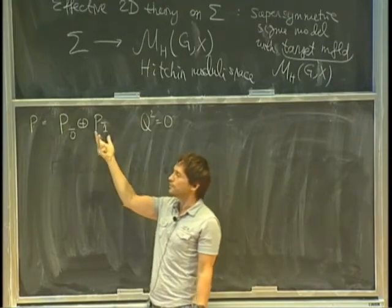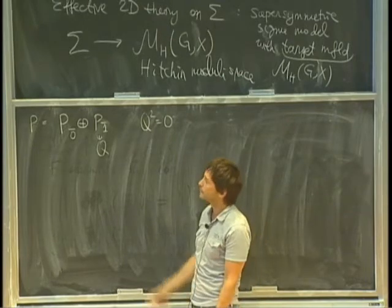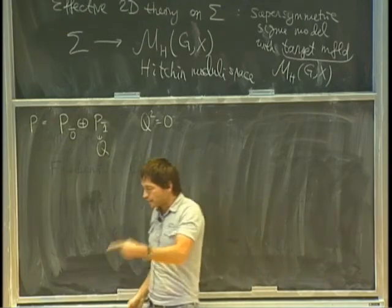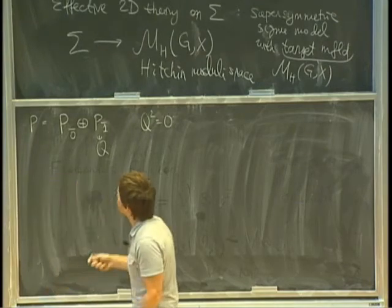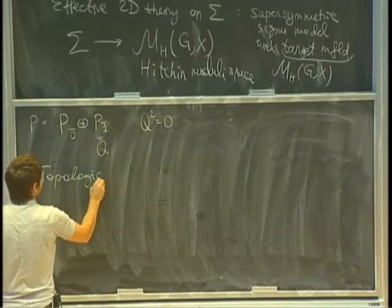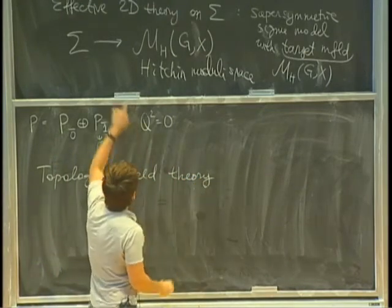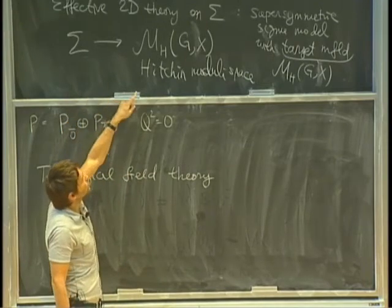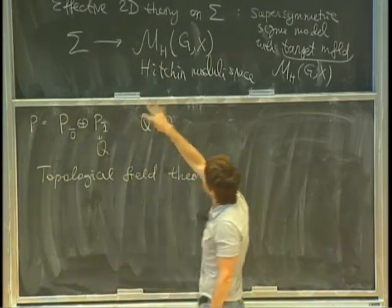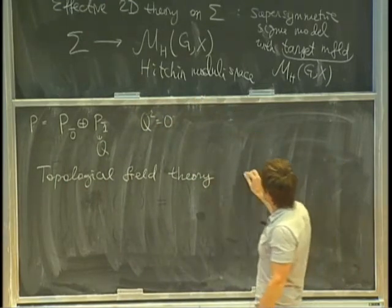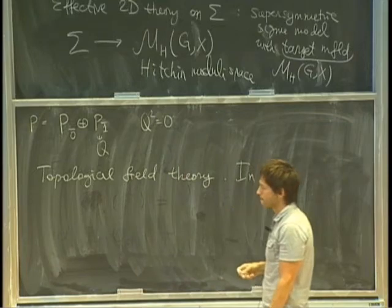Kapustin and Witten showed that under a particular twisting, there are two linearly independent supercharges, giving a one-parameter family of Q's. You restrict to things commuting with Q, obtaining what's called a topological field theory. In two dimensions, there are essentially two types of topological theories: the A model and the B model. We then have an A model with target manifold M_H(G) and a B model with target manifold M_H(LG). A and B refer to two types of twisting in two dimensions — they're just names.